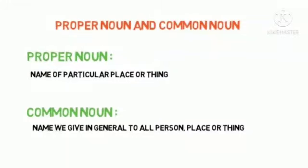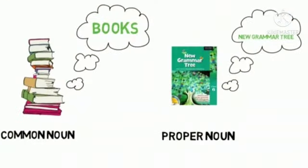What is a proper noun? It is the name of a particular person, place, or thing. For example, when we say 'books' in general, that is a common noun. But when we refer to a specific book — like the New Grammar Tree book — that is a proper noun.